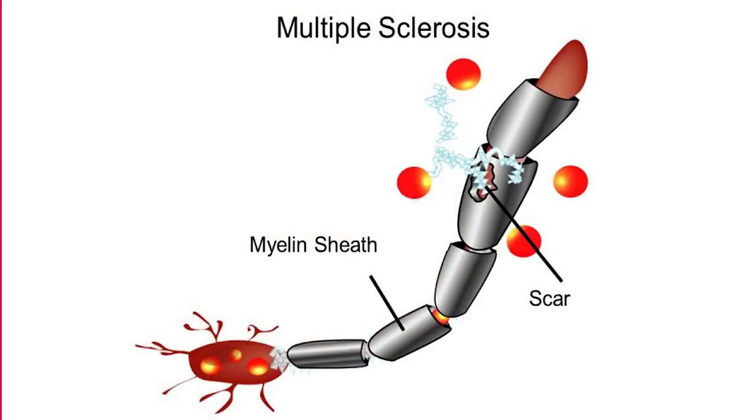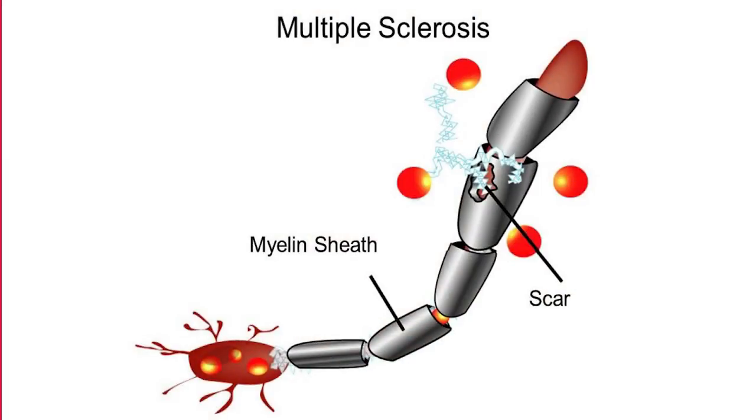I have relapsed remitting multiple sclerosis, so I'm fine 90% of the time. But that other 10%... Multiple sclerosis is an autoimmune disease where the immune system attacks the healthy neurons of the patient's central nervous system. This renders the neuron incapable of communicating signals to the rest of the body.